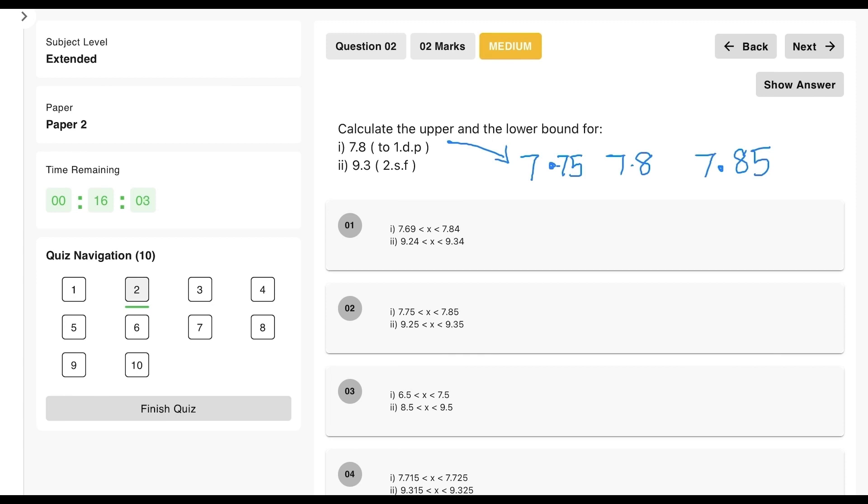And 9.3, if you look at it, well again if you are looking at two significant figures, then this has to be 9.25 to round up and 9.35 to round down. And you can see that the solution therefore is option number 2.